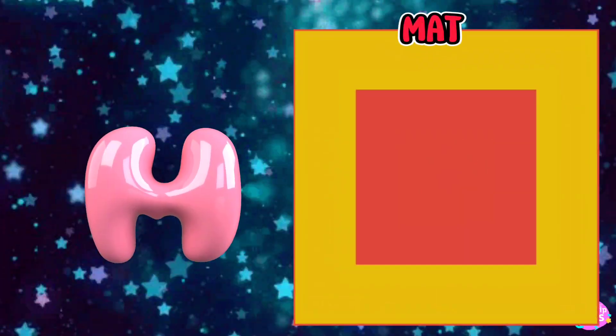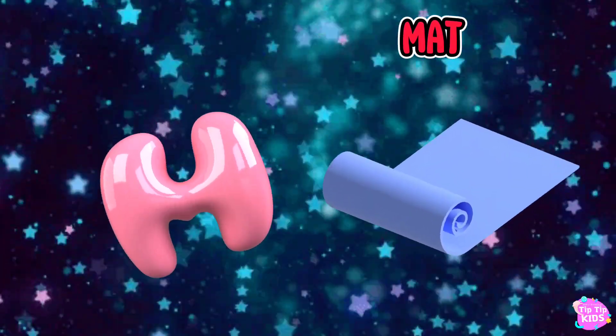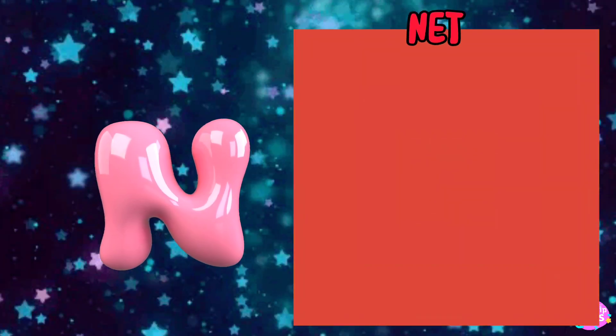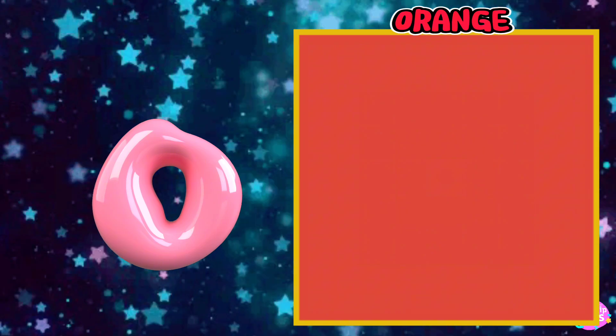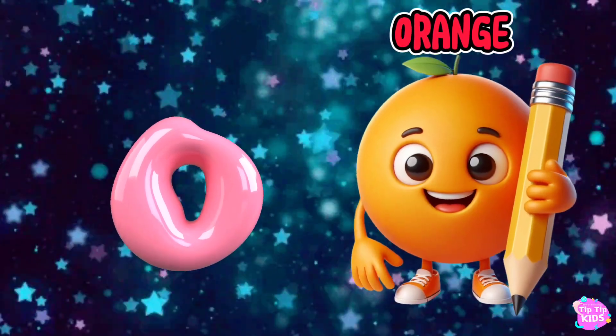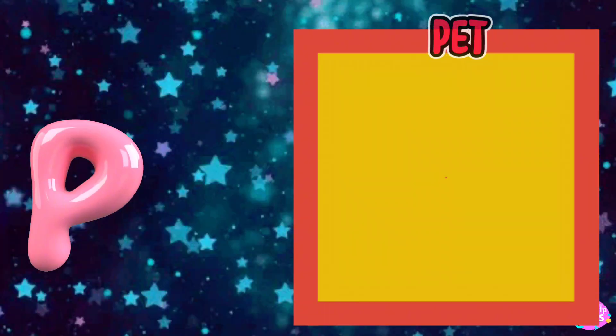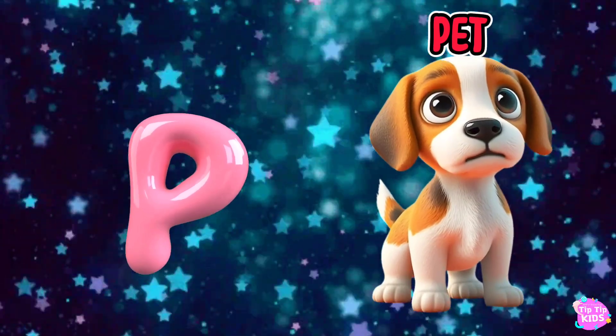M is for Mat, M-M-Mat. N is for Net, N-N-Net. O is for Orange, O-O-Orange. P is for Pet, P-P-Pet.